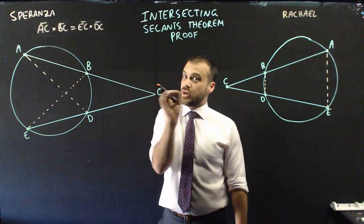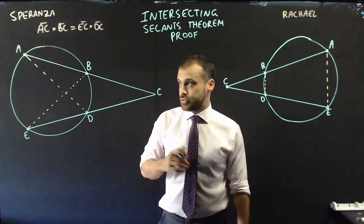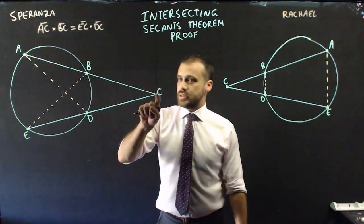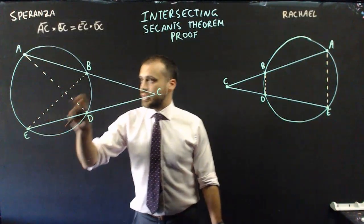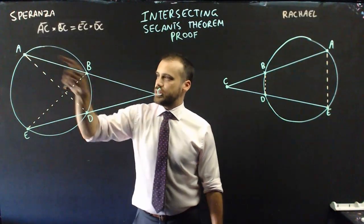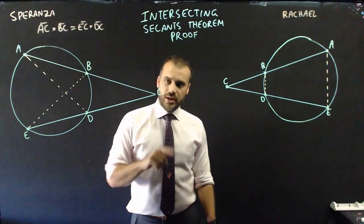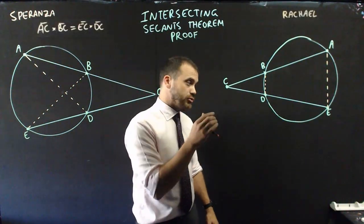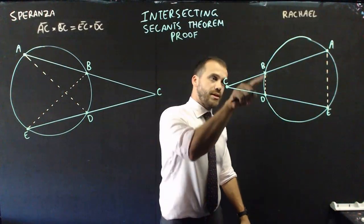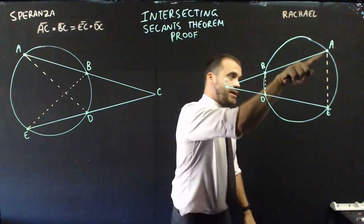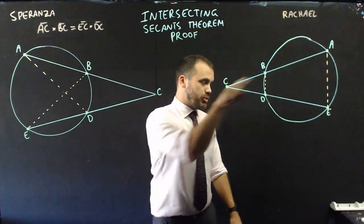Now, when I constructed these lines, I constructed two triangles: triangle ADC and triangle EBC. This triangle and this triangle. Rachel, on the other hand, also constructed two triangles. She constructed CBD and CAE. Small triangle, big triangle.